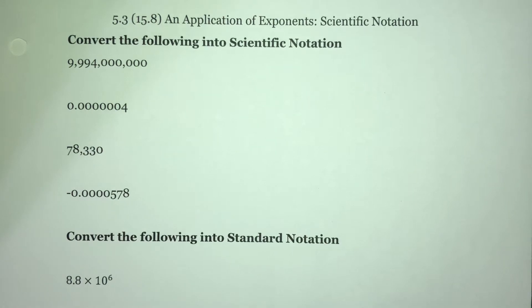Welcome to Section 5.3, an application of exponents: scientific notation. This is used a lot in the sciences because scientists tend to deal with really big numbers and really small numbers. If you have a whole bunch of zeros in there, it's easy to miscount. You leave off a zero, add an extra zero in, and you're off by a factor of 10, which is huge. So scientists developed a notation that would help reduce those kinds of mistakes.